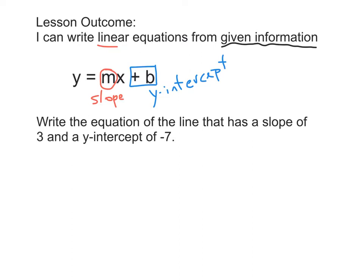This first example says: write the equation of the line that has a slope of 3 and a y-intercept of negative 7. Our job is to pull out the key information — we're going to use the slope of 3 and the y-intercept of negative 7, and put those in the right location in y equals mx plus b.